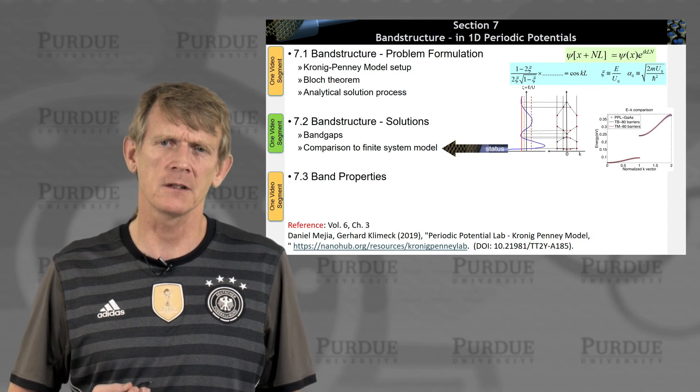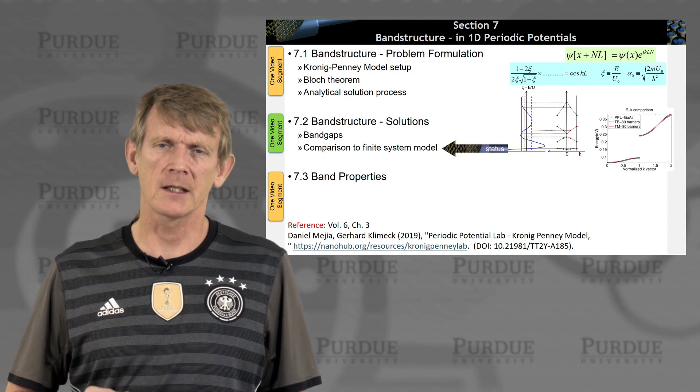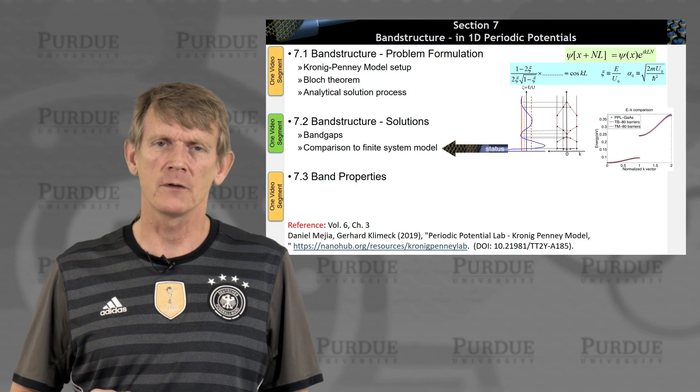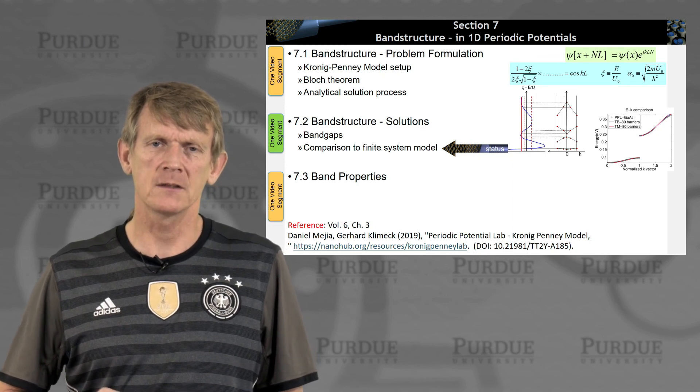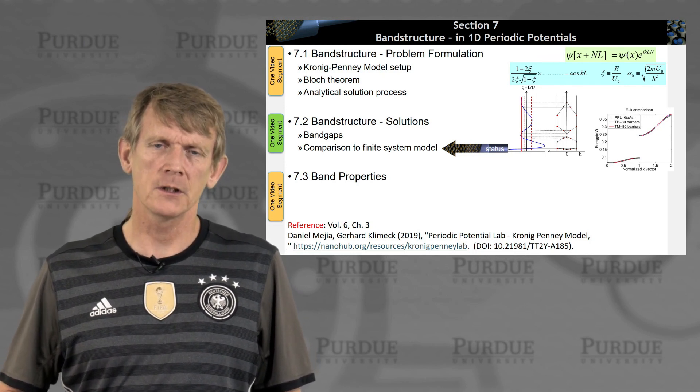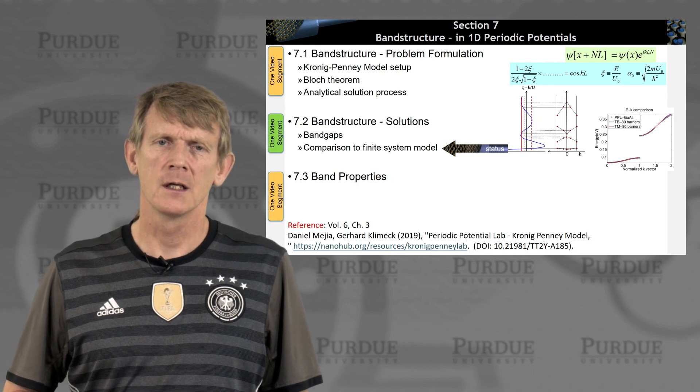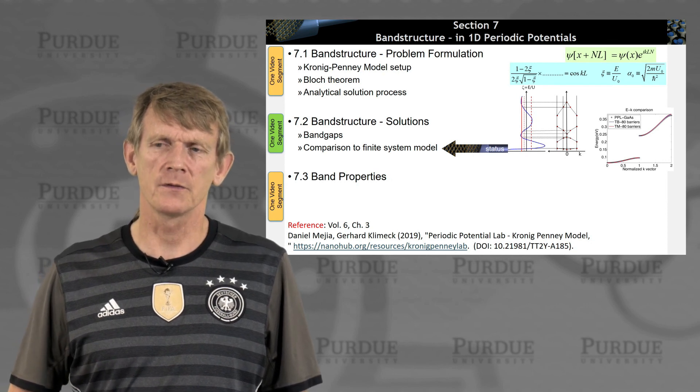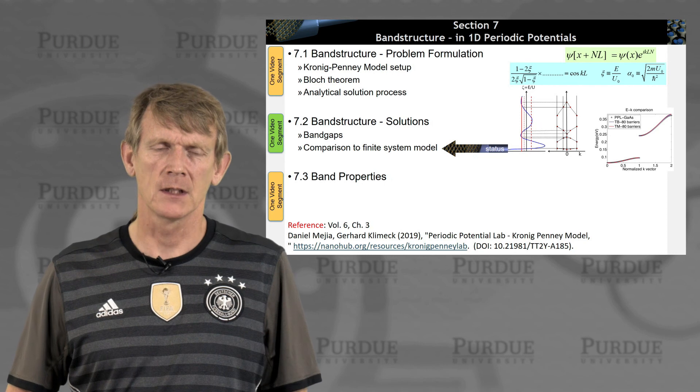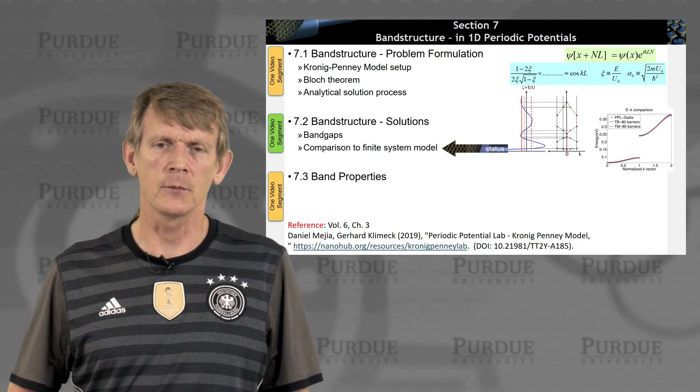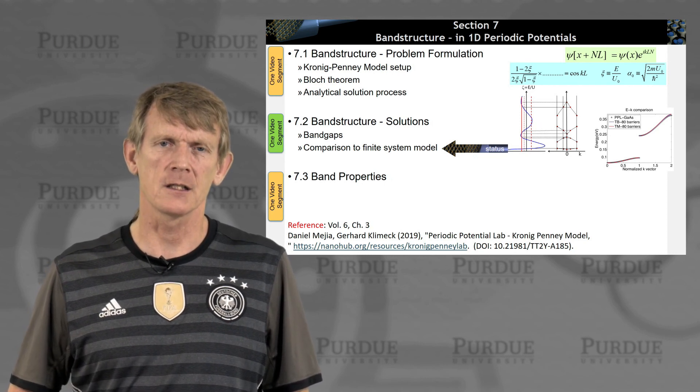The periodic potential is one way to consider an infinite cell by a periodic condition. You still have to introduce an artificial number of capital N for the number of cells that you consider, but it's arbitrary. Or you can do it numerically through shooting electrons through a finite number of barriers, but the finite number you can crank up to be pretty large as well.